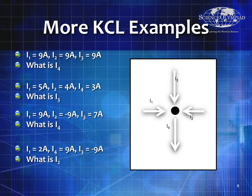In the last example, I1, I2, and I3 are all going in. So: 2 A − 9 A + I2 = 9 A. Since 2 − 9 = −7, we add 7 to both sides and I2 = 16 A. Let's verify: 16 + 2 − 9 = 9 A. That makes perfect sense.